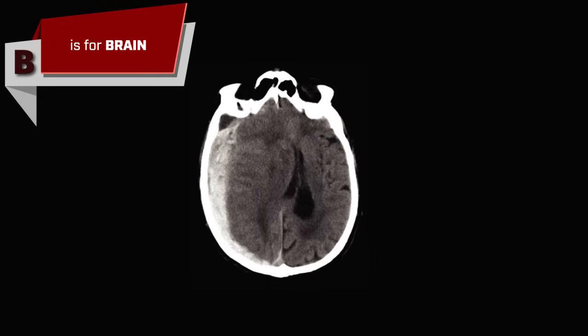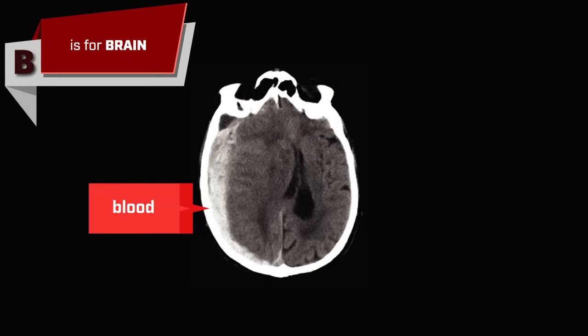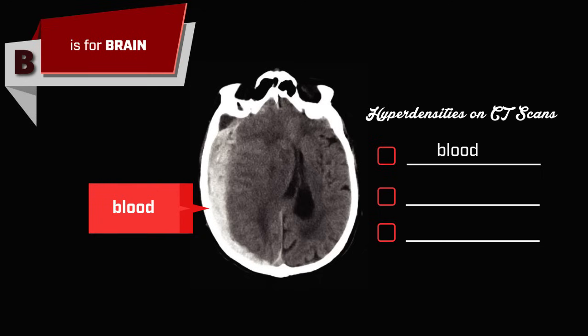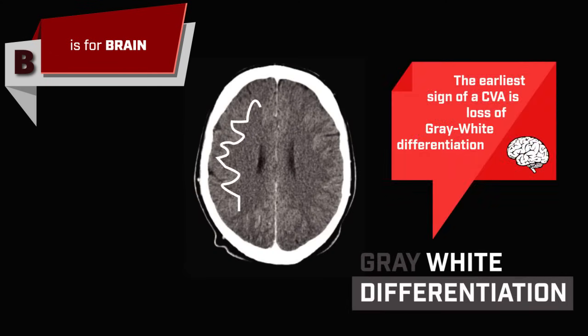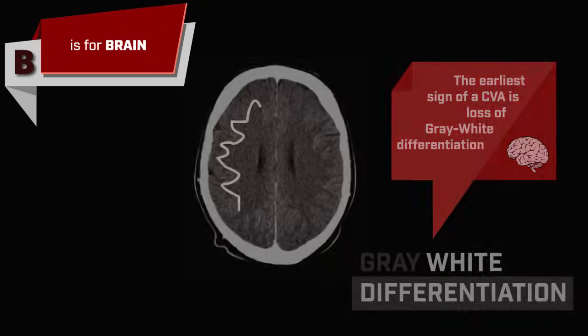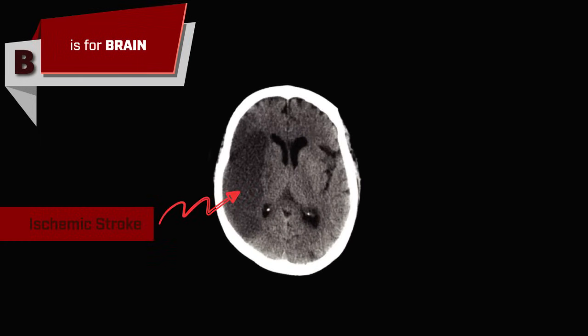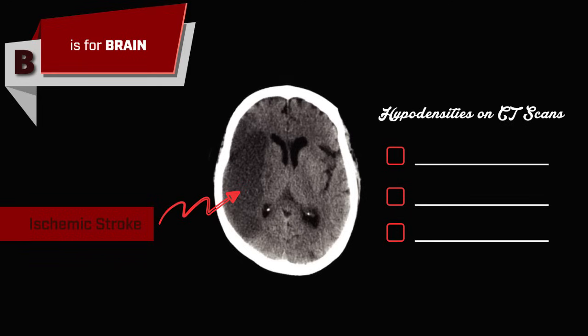On CT scans, blood appears as a hyperdensity. Other things that are hyperdense on CT scans include calcifications such as bone, and IV contrast. Also look for gray-white differentiation. The earliest sign of a cerebrovascular accident will be loss of gray-white differentiation. Ischemic strokes will be seen as a hypodensity on the CT scan. Other things that could be hypodensities include air and gas, fat, and tumors.